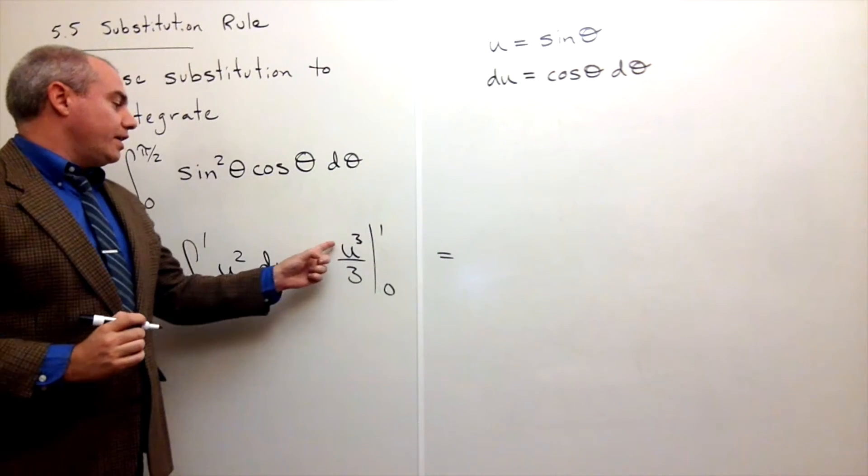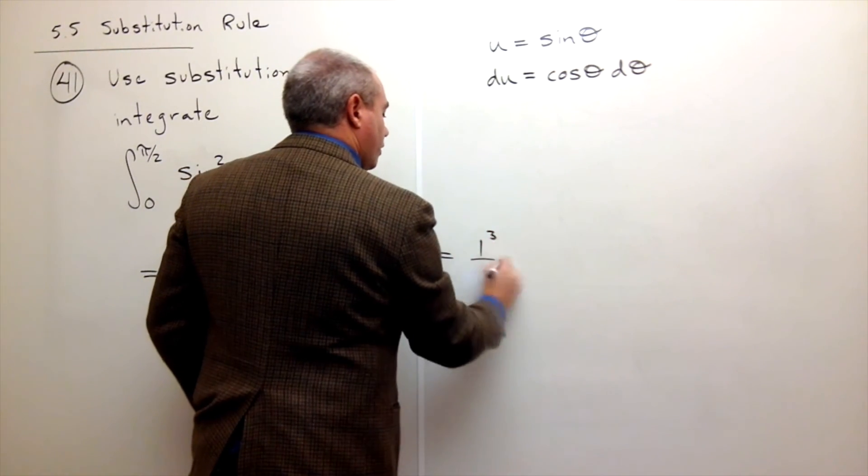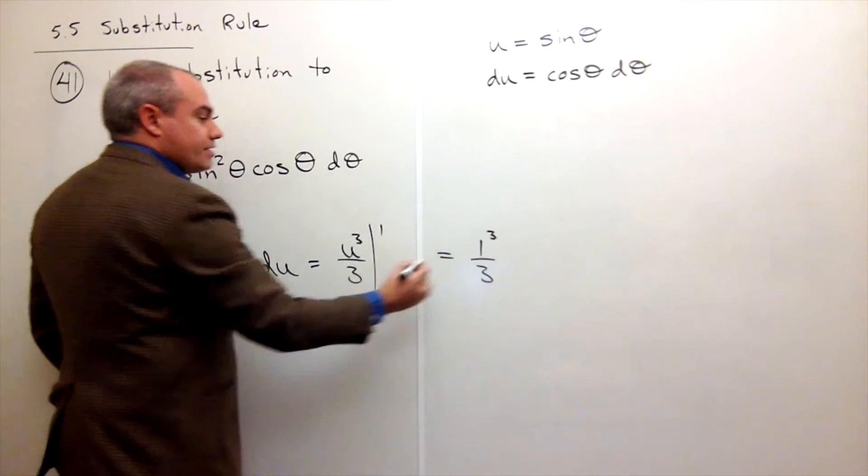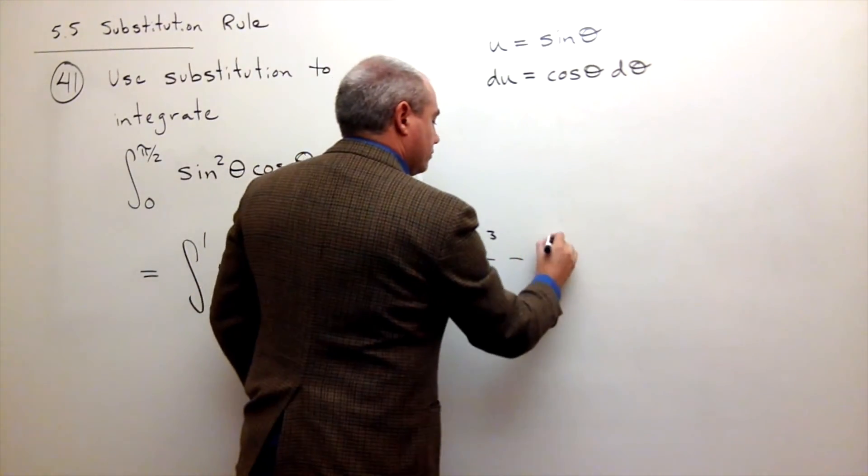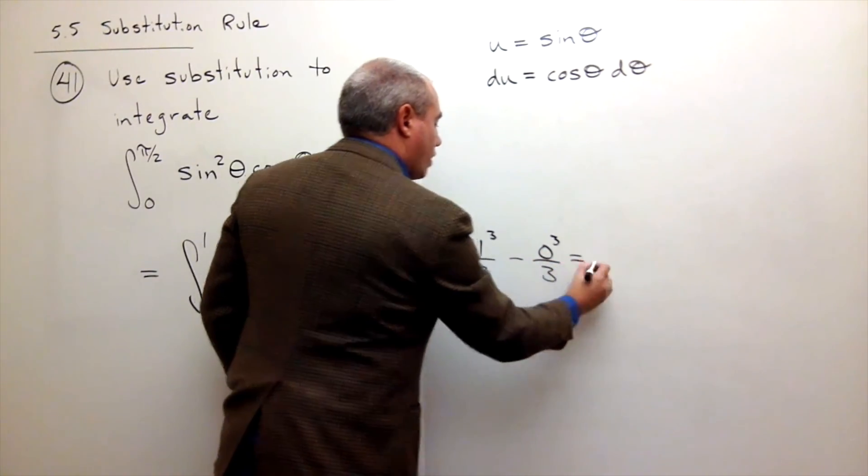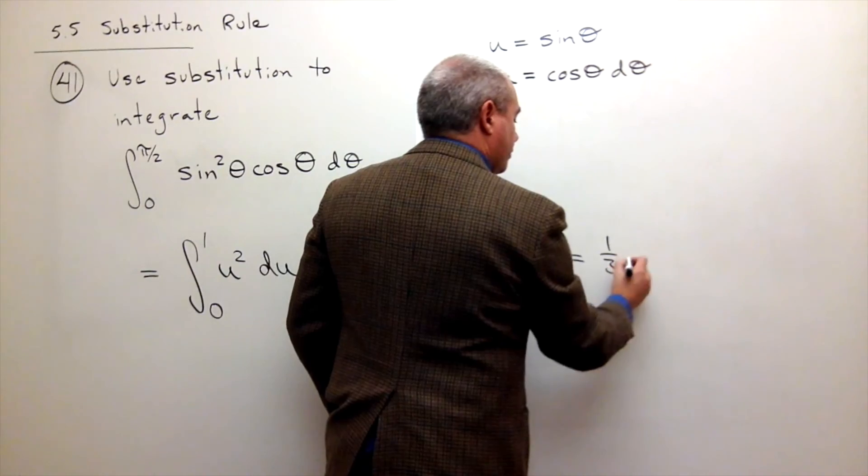I plug in one and I get one cubed over three. One cubed over three, minus, plug in zero, I get zero cubed over three. Or just one third minus zero. One third minus zero.